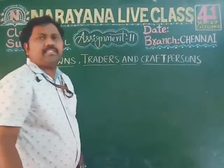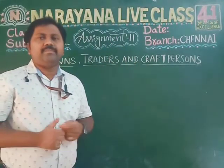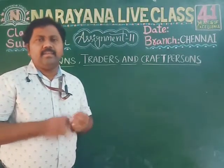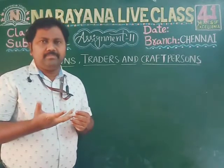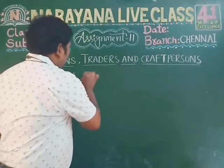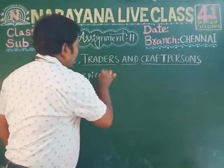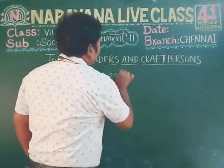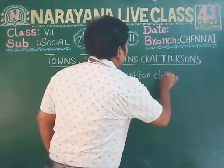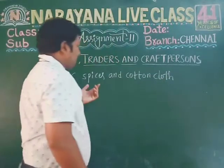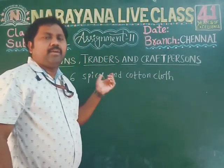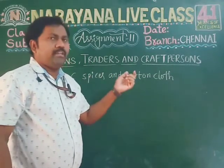Sixth question: what attracted European traders to India? The answer is spices like pepper and cotton cloth. Spices were a very important part of European cooking, and cotton cloth also attracted European traders greatly.